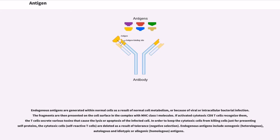Endogenous antigens are generated within normal cells as a result of normal cell metabolism, or because of viral or intracellular bacterial infection. The fragments are then presented on the cell surface in the complex with MHC class I molecules. If activated cytotoxic CD8 T cells recognize them, the T cells secrete various toxins that cause the lysis or apoptosis of the infected cell.